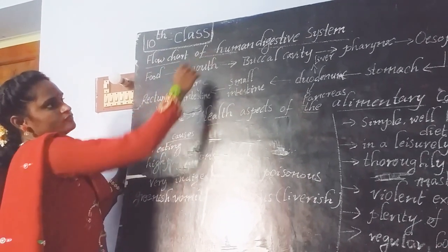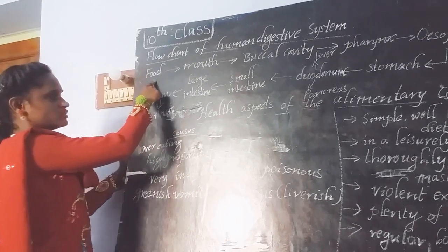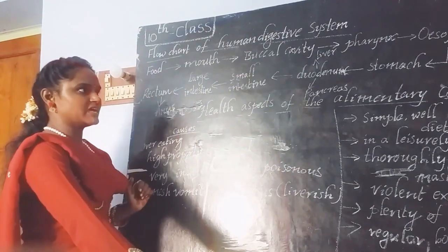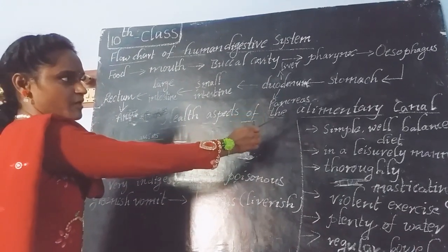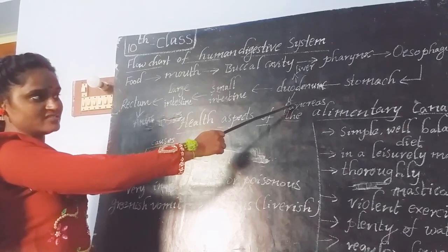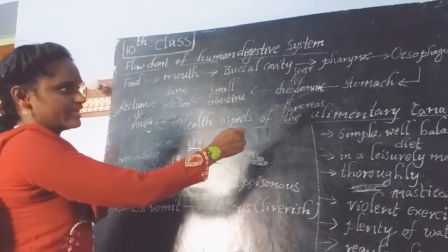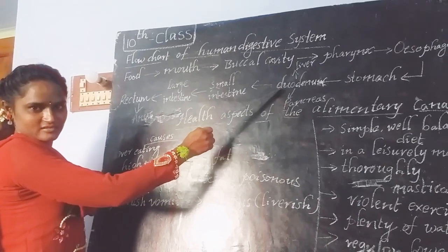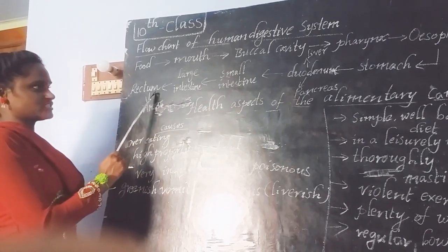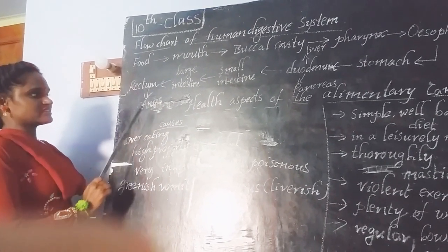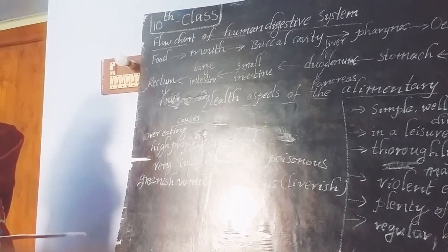The main topic is the flow chart of the human digestive system — how food travels in our alimentary canal. First, food enters the mouth, then to the buccal cavity, from buccal cavity to the pharynx, pharynx to the esophagus, esophagus to the stomach, stomach to the duodenum. The duodenum is the starting part of the small intestine, associated with two glands: the liver and pancreas. From the small intestine, food passes to the large intestine, then to the rectum, and finally to the anus, where undigested food is expelled.